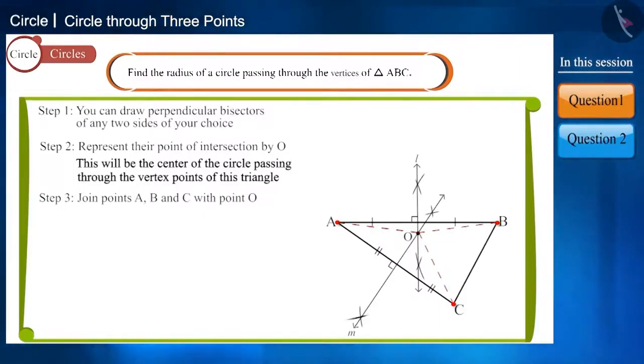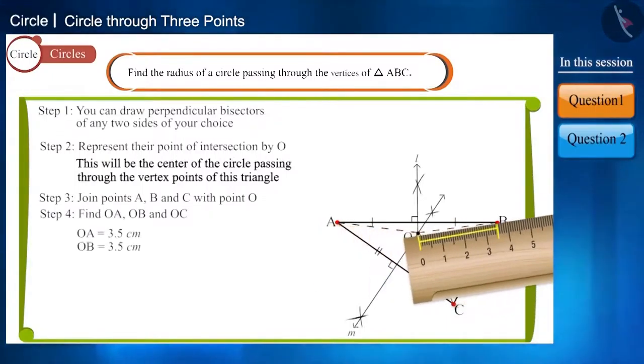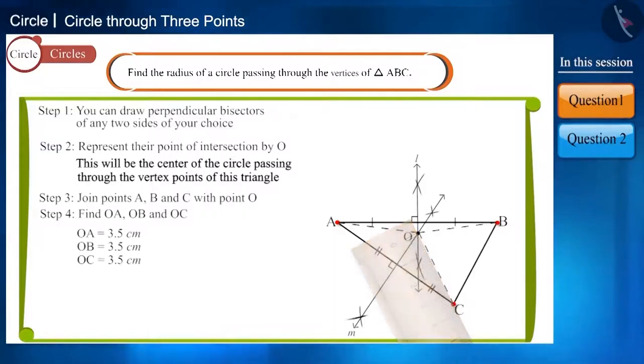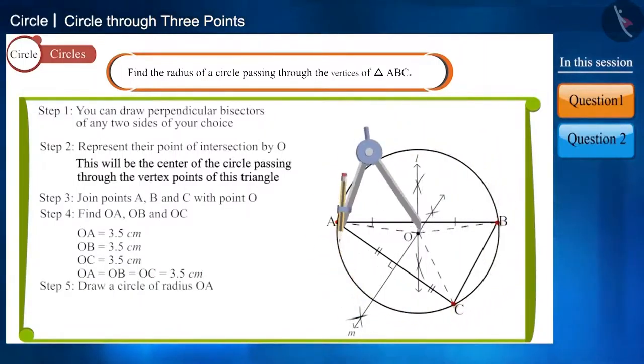With the help of a scale, you can now find the length of all three OA, OB and OC. You can see that the length of these three are equal. Take the length of OA in the compass and keeping its pointed end at point O, draw a circle.